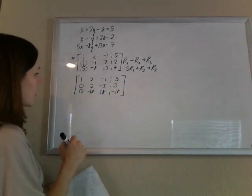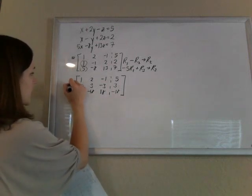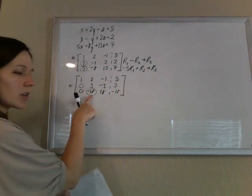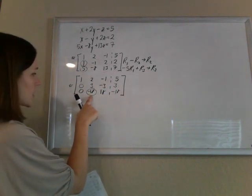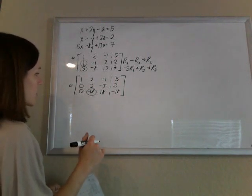Alright. So now what we're going to do is use my second row to get zeros in my second column. I'm only going to go for the bottom one to make it easy on myself to pull it out of the matrix as fast as I can.